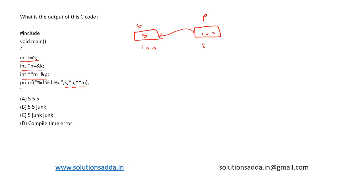The address of pointer variable p is 200. Now m is a double pointer variable storing the address of p, that is 200, and this is at address 300.